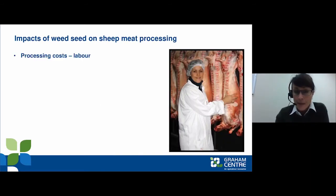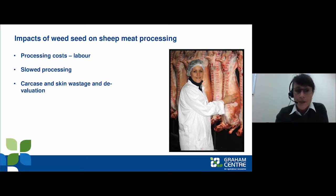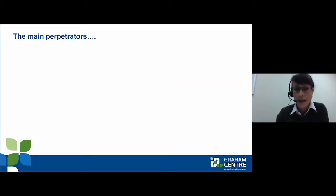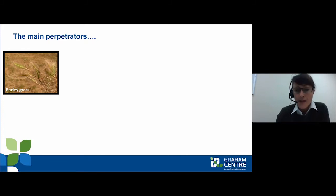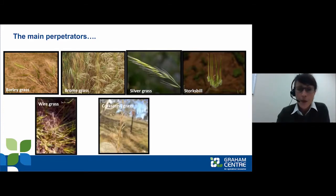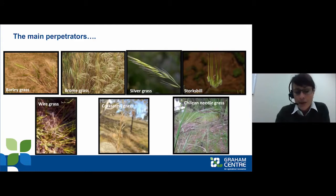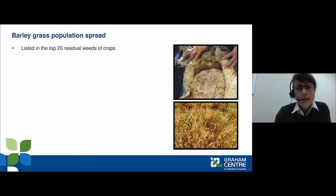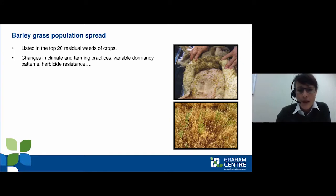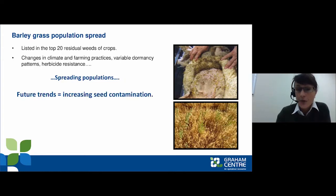There are a number of impacts on processing including the cost due to labour and slowed processing, carcass and skin wastage and devaluation, significant discounts in price, and potential loss of export licence for the plant. The main perpetrators of the problem are a number of grass species — seven in total — but the main one I focused on was barley grass, as it's most associated with the literature. Barley grass is listed in the top 20 residual weeds of crops, and due to changes in climate and farming practices, plant populations are spreading, leading to potential future increases in seed contamination.